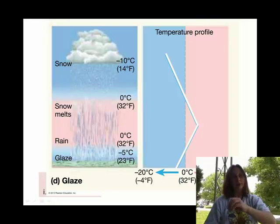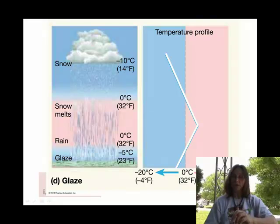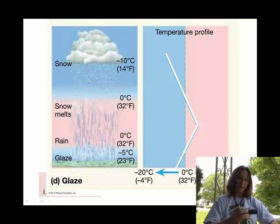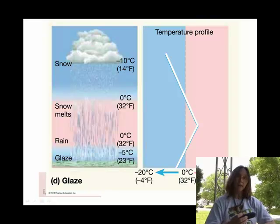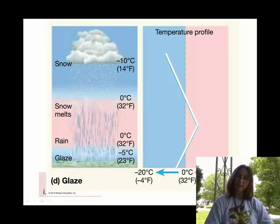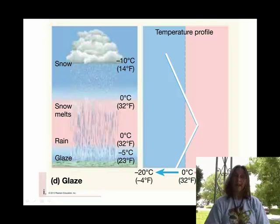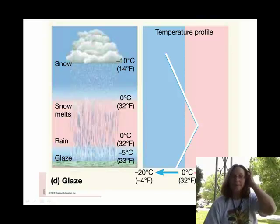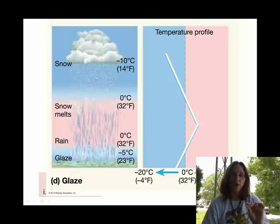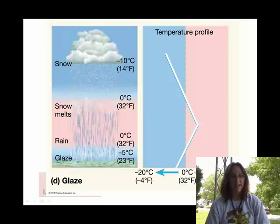It hits the temperature inversion. So now, as it falls closer to the earth's surface, it gets colder. And it gets cold enough near the earth's surface to refreeze, but not enough time to pelletize. So we have freezing rain. It freezes on contact. And notice that your author calls freezing rain glaze. It's the same thing.